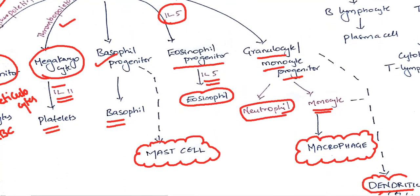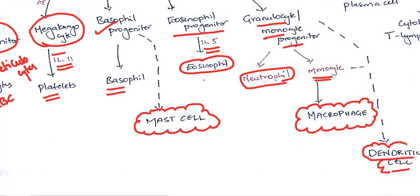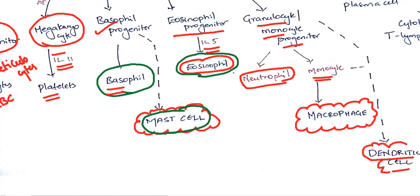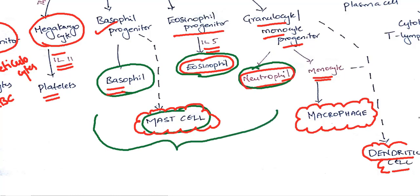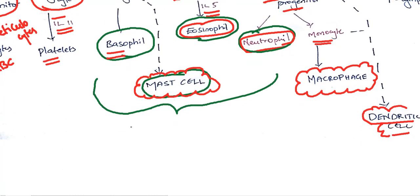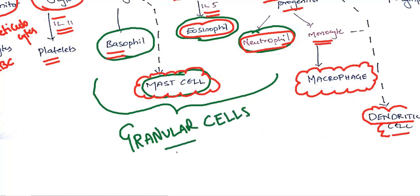In the myeloid lineage, basophil, mast cell, eosinophil, and neutrophil — all these four cells are known as granular cells. You mainly have to remember that basophil, eosinophil, and neutrophil are known as granular cells.